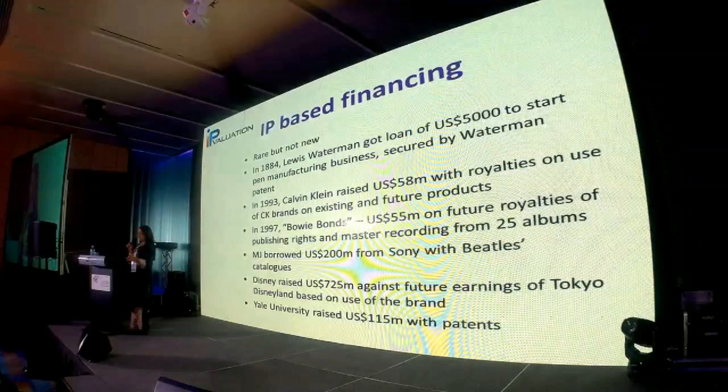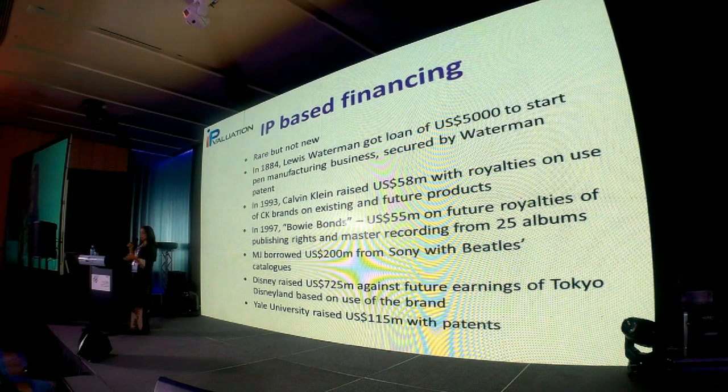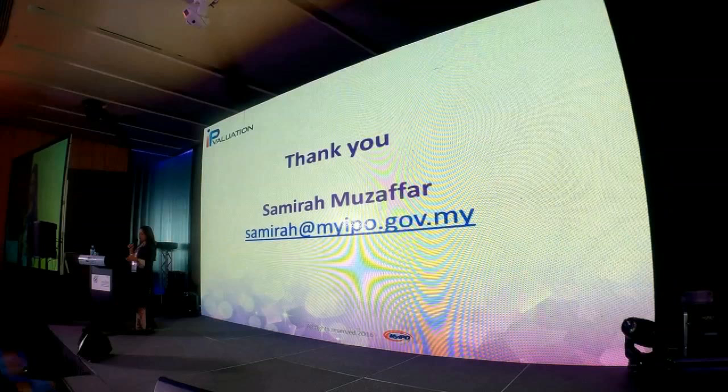IP-based financing is not new — it's not new in the US, for example. It started from 1884. There are all the other IP rights examples like the Bowie bonds and Calvin Klein raising 58 million. All this is common — using creative rights to get financing. Most creative industry businesses don't have big factories or houses to put up as collateral. The things that you really have are your ideas and what you have translated into content — these are the things you want to put up as financing.